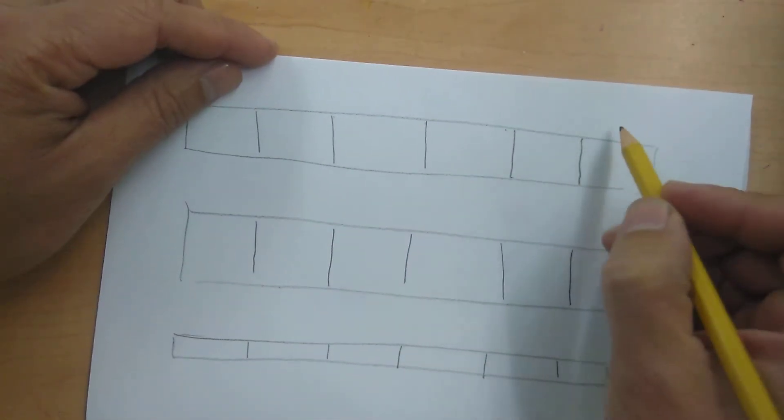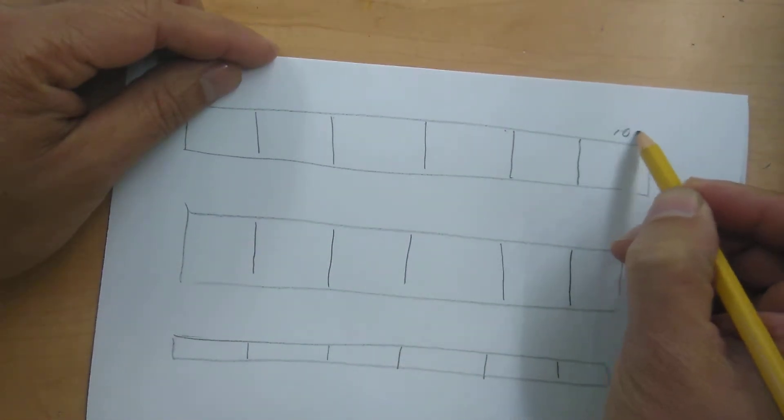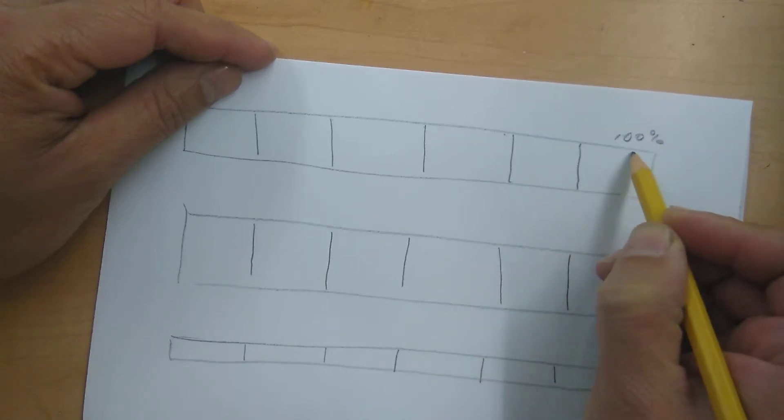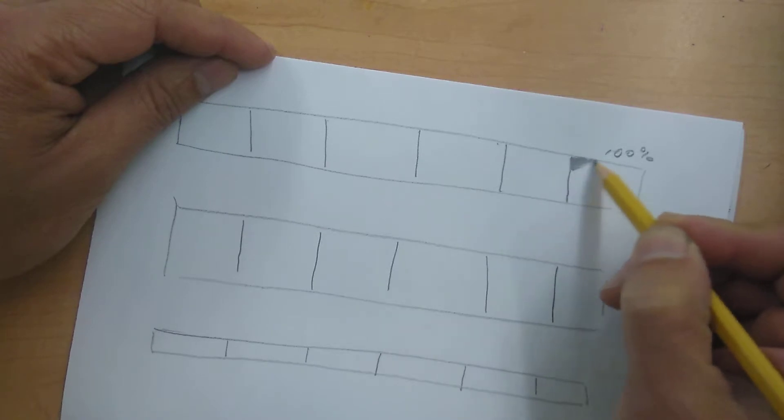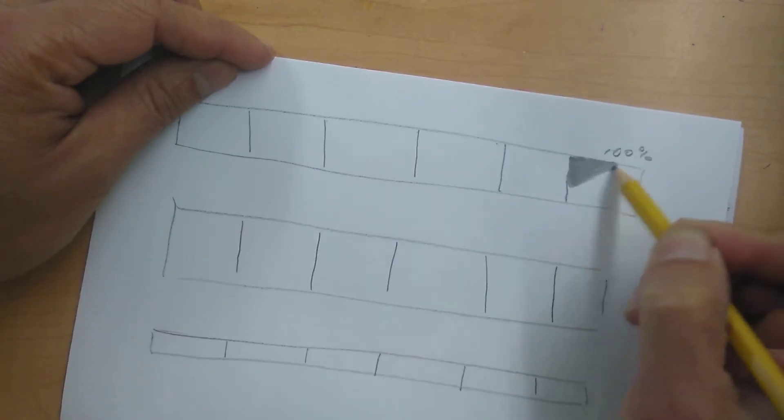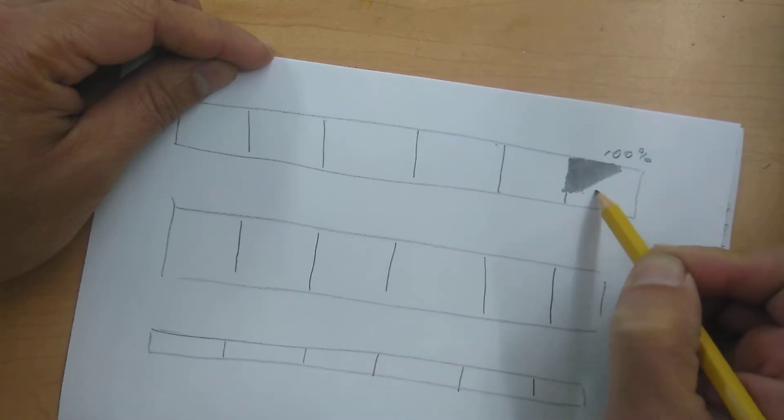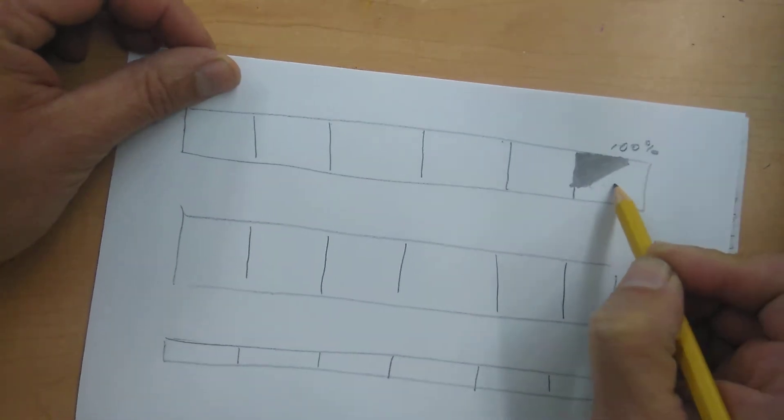This over here is going to be our darkest value. This would be 100%. And this is going to be as black as you can go. So pressing down as hard as I can, almost busting the lead on my pencil. I'm going to come in here and shade this area as dark as I can go.